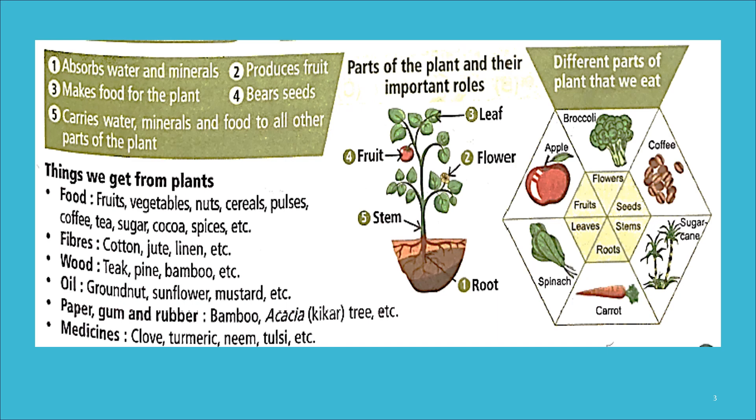Number three is leaf — the leaf is the chef of the plant because it makes food for the plant by the process of photosynthesis. Number four is fruit — it protects seeds for the plant. Number five is stem — it carries water and minerals absorbed by the root, as well as food, to all other parts of the plant.